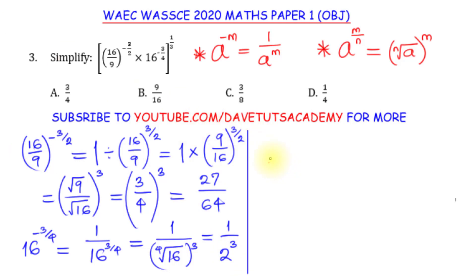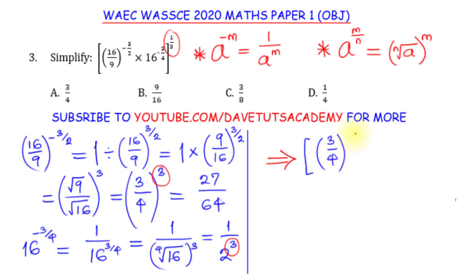Now I bring everything into the bracket. I can rewrite the first expression as 3 over 4 raised to power 3, and the second as 1 over 2 raised to power 3. All of these are raised to power 1 over 3. I can distribute this outer power by multiplying each entry: 3 over 4 raised to power 3, times 1 over 3; multiplied by 1 over 2 raised to power 3, times 1 over 3.